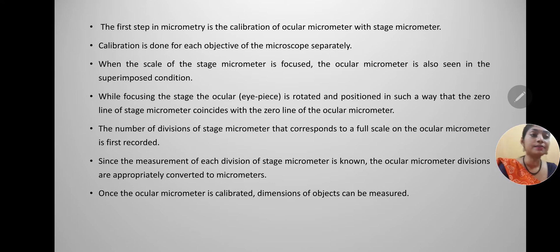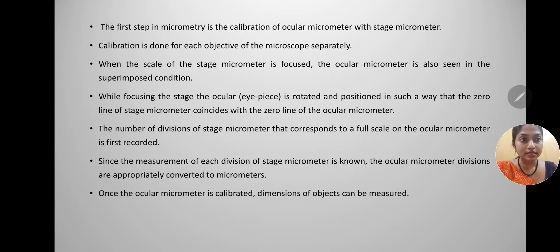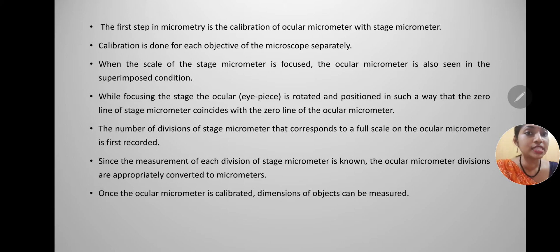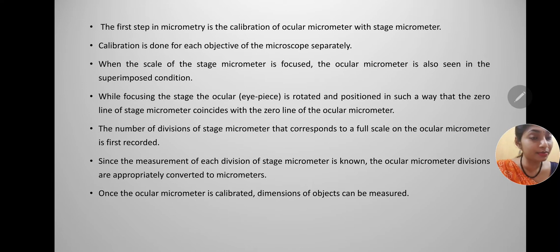We have a calibration factor formula wherein we obtain the calibration factor. Since the measurement of each division of the stage micrometer is known, the ocular micrometer divisions are appropriately converted to micrometers. Once the ocular micrometer is calibrated, the dimensions of objects can be measured.